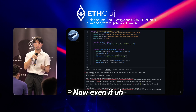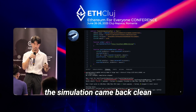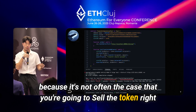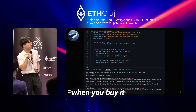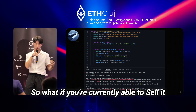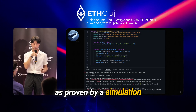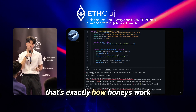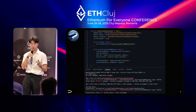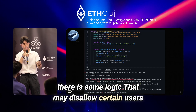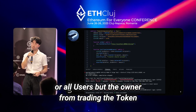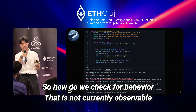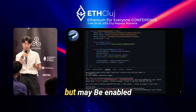Even if the simulation comes back clean, we're not yet safe, because you're not going to sell the token right when you buy it. What if you're currently able to sell it as proven by a simulation, but that's no longer the case in the future? In fact, that's exactly how honeypots work. Within honeypots there is some logic that may disallow certain users — or all users but the owner — from trading the token. So how do we check for behavior that is not currently observable but may be enabled?